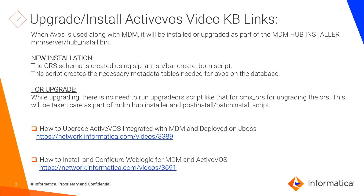When ActiveVOS is used along with MDM it will be installed or upgraded as part of the MDM hub installer while running the hub install bin executable. For a new installation, the ORS schema for ActiveVOS is created using the zip and create BPM script, which creates the necessary metadata tables on your database. For an upgrade from a lower to higher version, there is no need to run separate database upgrade scripts — the upgrade is handled by the MDM hub installer and post-installer page installs.